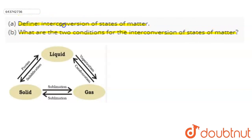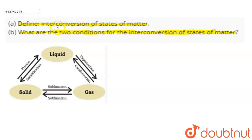In this question, firstly we have to define what is interconversion of states of matter, and secondly we have to show the two conditions for the interconversion of states of matter. So let's start with what is interconversion of states of matter.